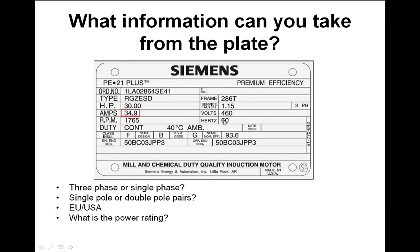Siemens probably sell the same motor for the European market with a different label showing lower voltage and 50 Hz. Power rating: multiply current by volts — you get around 13,000 to 16,000 watts. When you get these plates, it's worth reading them carefully before taking the motor apart — they give you a very good idea of what you're dealing with.